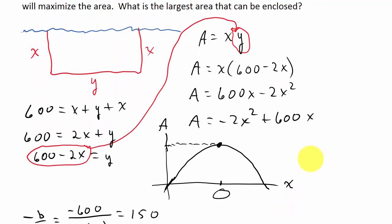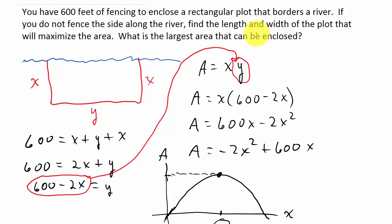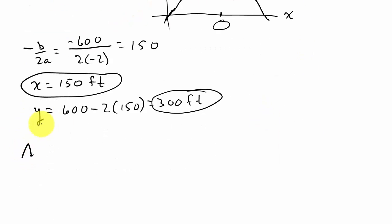And then also, it says what is the largest area that can be enclosed. Well, the largest area, I just, X is 150, this is 150, and Y is 300. Well, the area is just length times width, so that's 150 times 300. And so the maximum area is just 150 times 300, which is equal to 45,000, and that would be square feet.